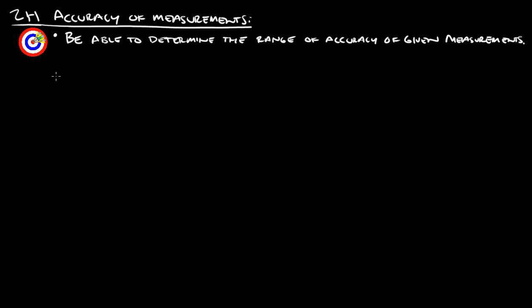Hello, this is Mr. Stansbury. I'm going to go over the notes for 2H, which is accuracy of measurements. At the end of this, you should be able to determine the range of accuracy of given measurements.